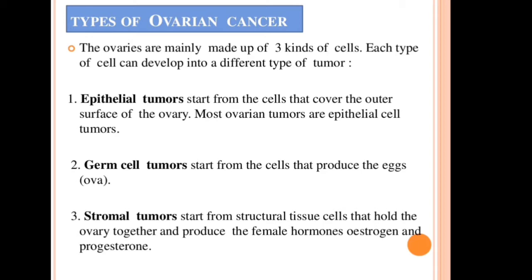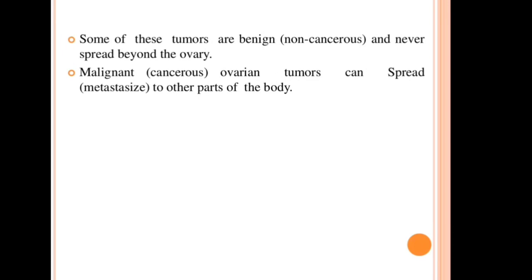Some of these tumors are benign — non-cancerous — and never spread beyond the ovaries. There are two types: benign, which is non-cancerous and stays in one part, and malignant, which is more cancerous and dangerous. Malignant ovarian tumors can spread and metastasize to other parts of the body.